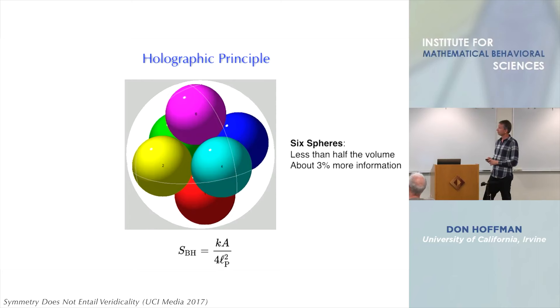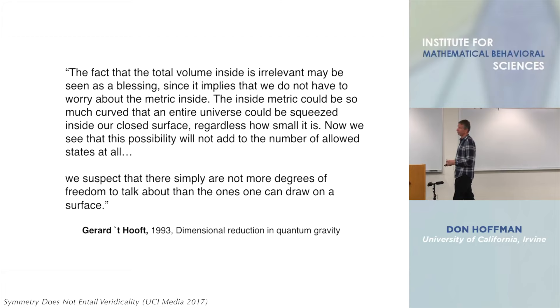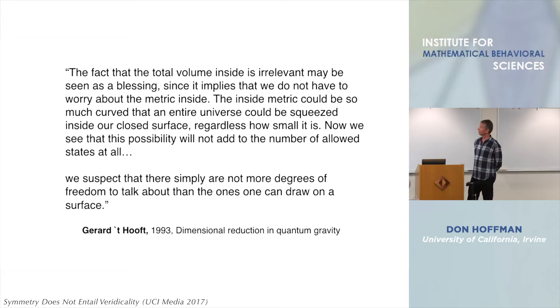So Gerard de Hooft, who was one of the first to propose to discover this, he won the Nobel Prize. To discover this, he said, the fact that the total volume inside is irrelevant may be seen as a blessing, since it implies that we don't have to worry about the metric inside. The inside metric could be so much curved that an entire universe could be squeezed inside our closed surface, regardless of how small it is. Now we see that this possibility will not add to the number of allowed states at all. Then he says, we suspect that there simply are not more degrees of freedom to talk about than the ones we can draw on the surface.